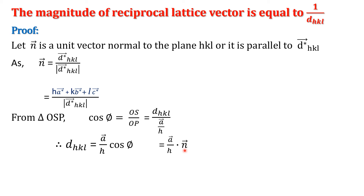Since unit vector n̂ is parallel to d* hkl, we write (a/h)·cos φ = (a/h) · n̂, and since n̂ is a unit vector, this gives simply (a/h)·cos φ. Hence we express d_hkl = a/h · n̂, where n̂ is the unit normal vector defined earlier.